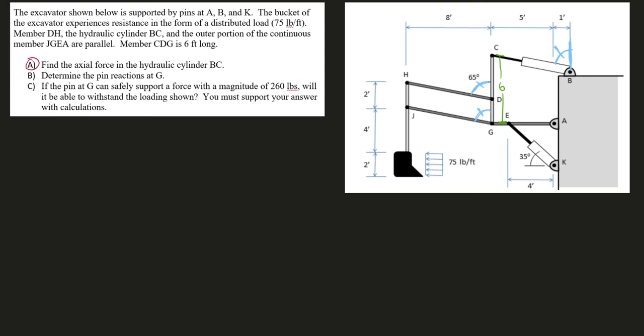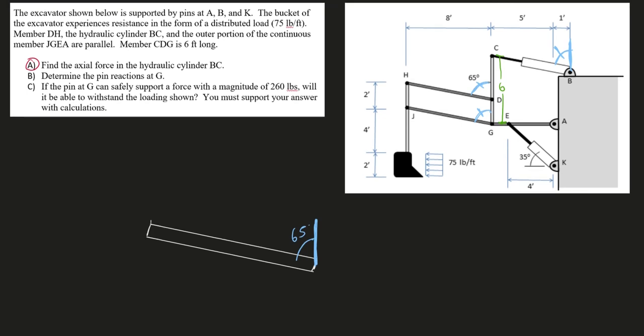Part A: find the axial force in the hydraulic cylinder BC. Here's BC. I noticed that this member is a two-force member, and two-force members are great for us. You should always be looking around for two-force members. There are only two things touching this member: pin support B and the effect at C.